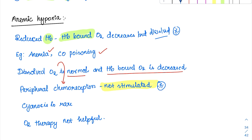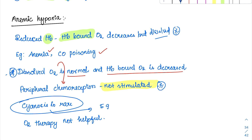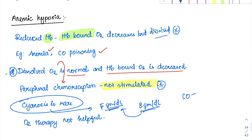Even after CO inhalation, there is no stimulation of peripheral chemoreceptors because dissolved oxygen levels remain completely normal. Cyanosis is very rare in anemic hypoxia — to get cyanosis you need at least 5 g/dL of deoxyhemoglobin, but in a severely anemic patient with only 8 g/dL total hemoglobin, if 5 g/dL were deoxyhemoglobin, the patient would already be in severe deterioration. In CO poisoning, the blood turns cherry red, so cyanosis does not occur.